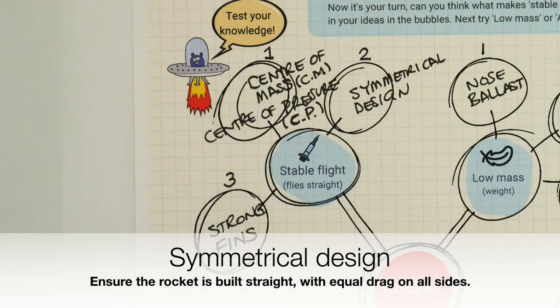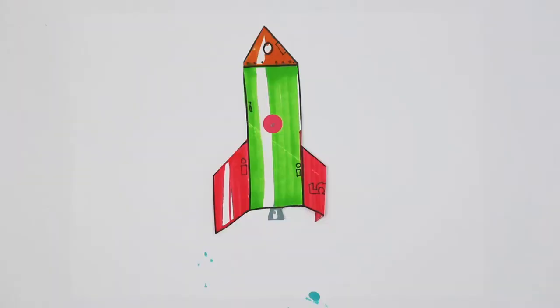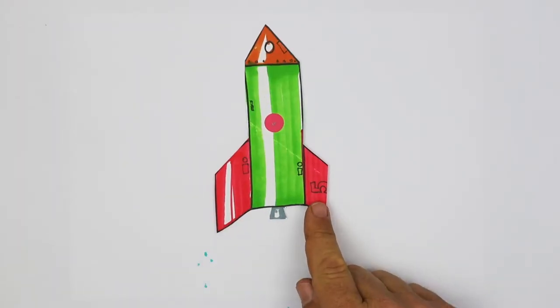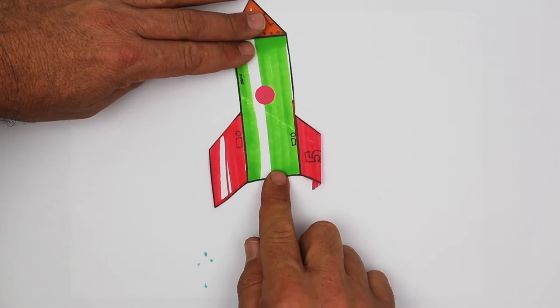The next bubble is number two, symmetrical design. Imagine a line of symmetry running up and down the rocket. This rocket is definitely not symmetrical. On the right-hand side, the fin's much shorter. It'll have less drag and it won't fly straight.